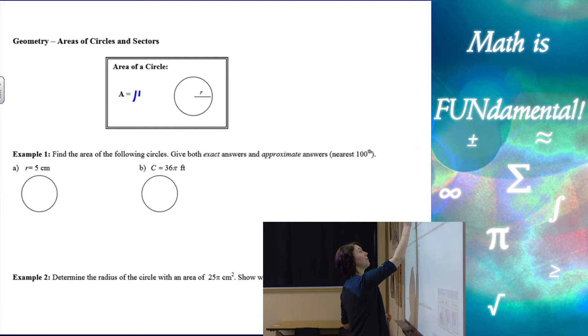We have area of a circle is pi times r squared. Another way you can think about it, just moving things around a little bit, is squaring the radius and then multiplying by pi. Be careful not to square pi when you're doing the area. Only the radius.